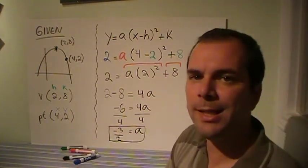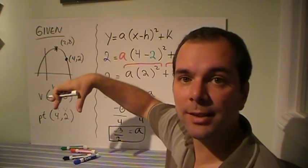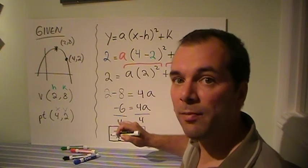So does it make sense that this is a negative a value? Well, it opened down, so yes, that makes sense. And I found the a, but I need to give my last step, which is rewriting the equation.